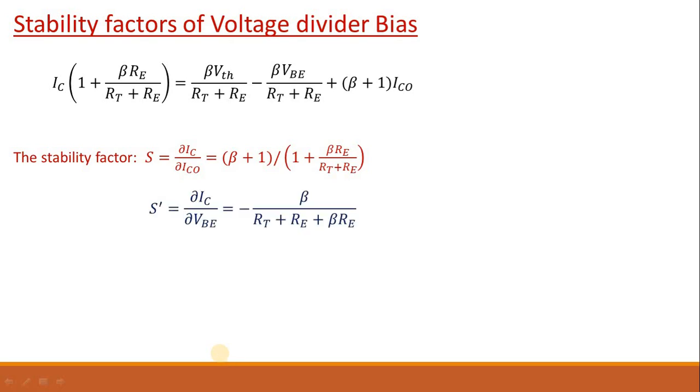Second one is S prime which will be equals to del Ic upon del Vbe and this will be equals to minus β upon Rt plus Re plus βRe. So from this expression also if you choose Re much much greater than RT, then this expression will be approximately equals to minus β upon Re. So if you increase Re, S prime will decrease and our motive is to lower the stability factor. Thus we can say stability against reverse saturation current and Vbe can be improved by choosing high value of Re compared to RT.